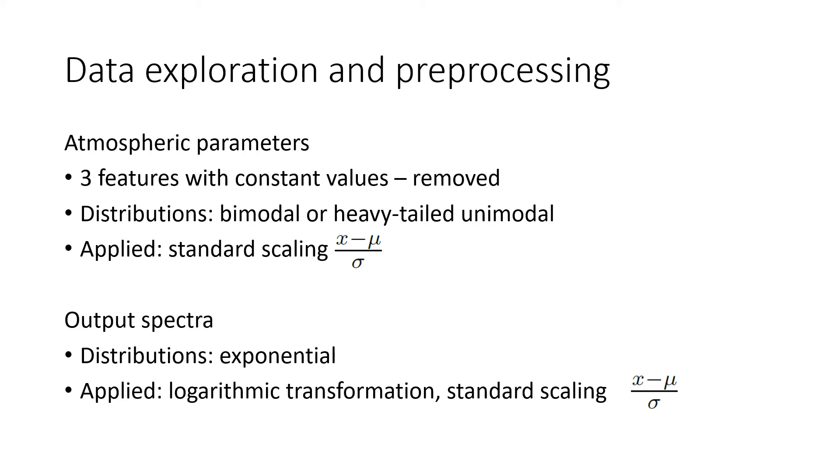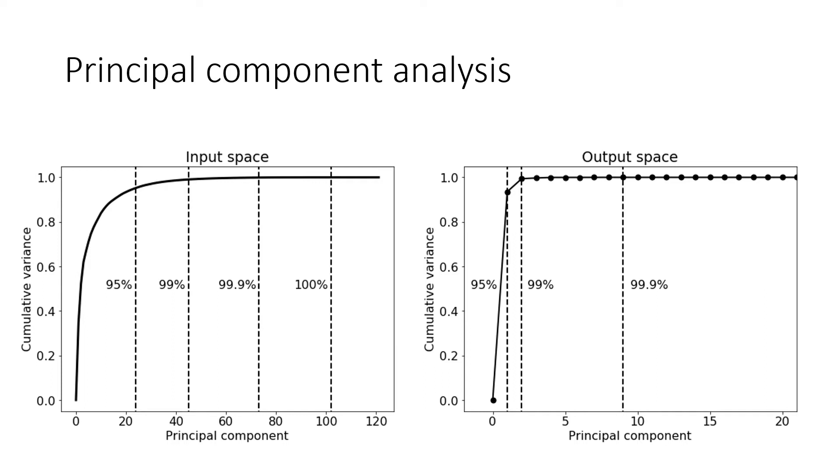One of the most common methods for dimensionality reduction is principal component analysis. This method aims to find linear transformations into lower dimensional subspaces that maximize the variance in the data. Pictured here are two scree plots, which depict the cumulative variance explained by a given number of principal components. This can give us valuable insight into the intrinsic dimensionality of the data. On the side of the atmospheric parameters, we can see that in order to explain 99% of variance in the data, we need about 45 principal components out of 122 dimensions.